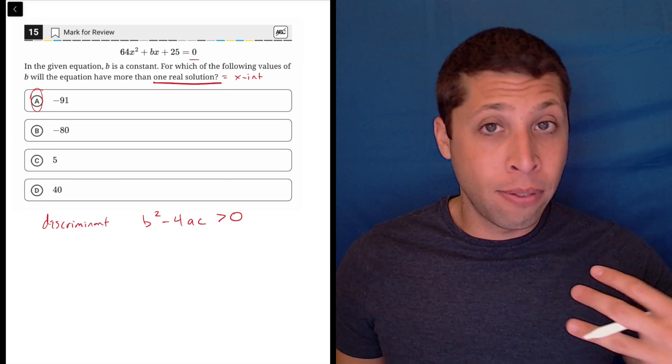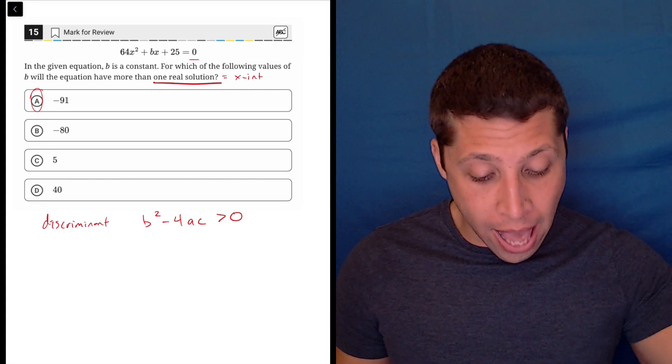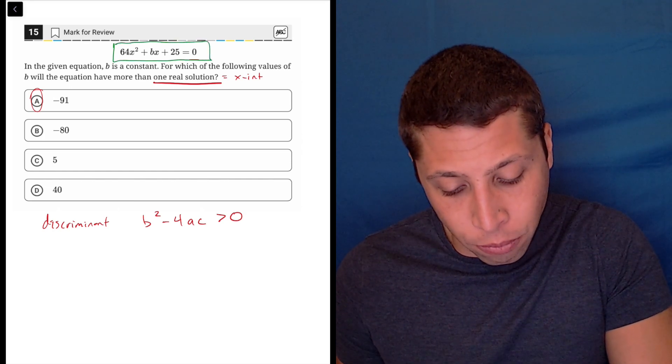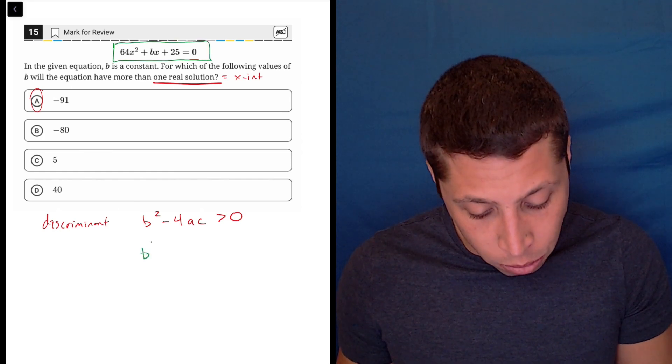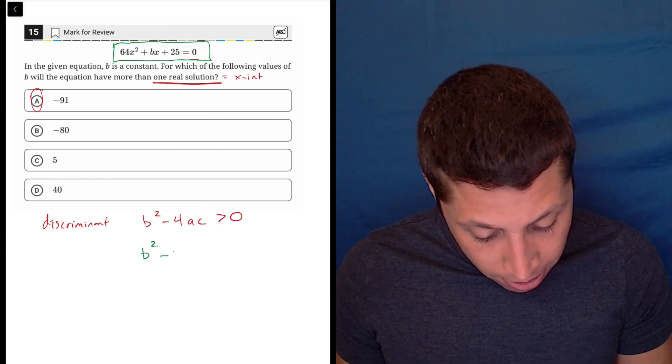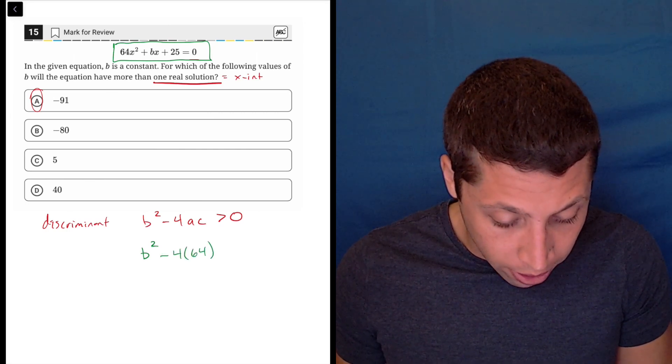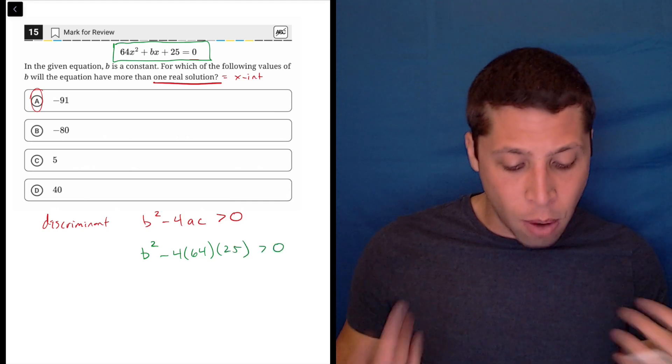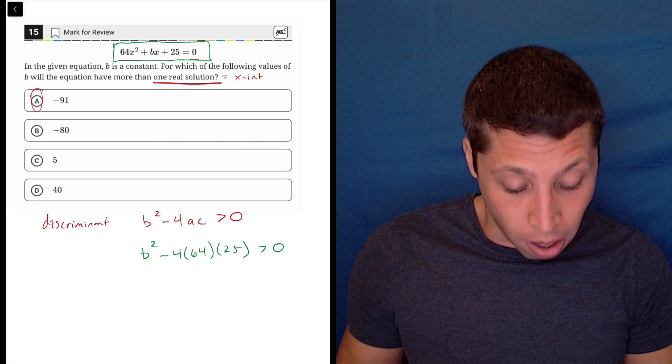And we have values for b, a, and c because we have a quadratic written in standard form. So the b is the unknown, so we'll leave that as b. The a is 64, and the c is 25. And when we plug in, we see now we have an ability to solve for b.